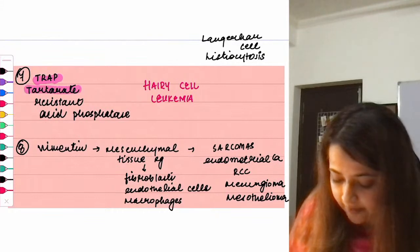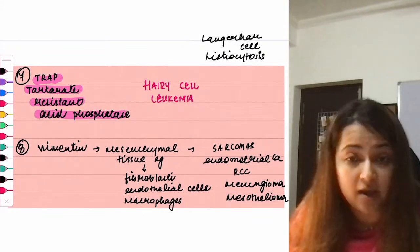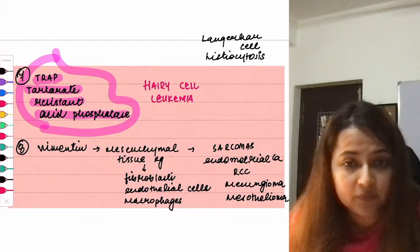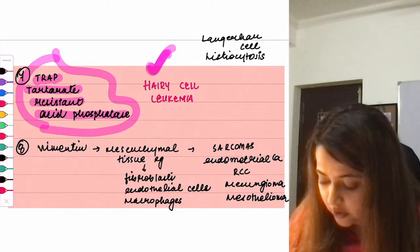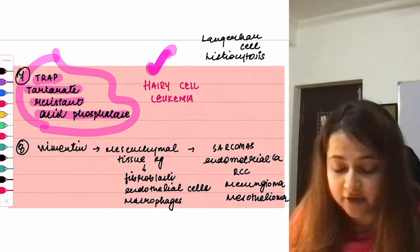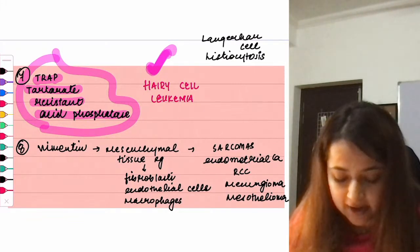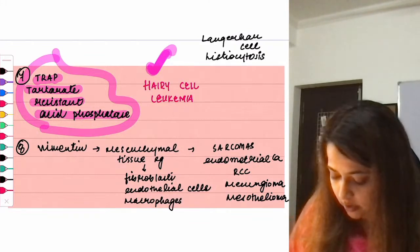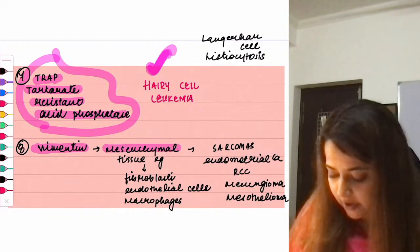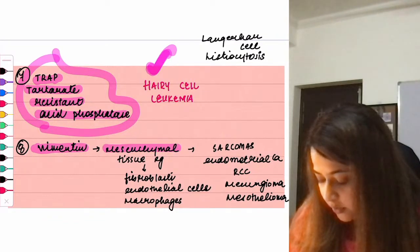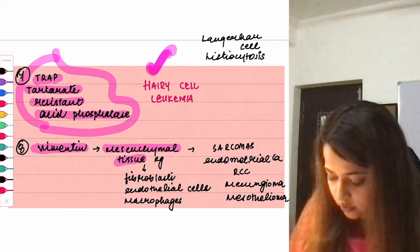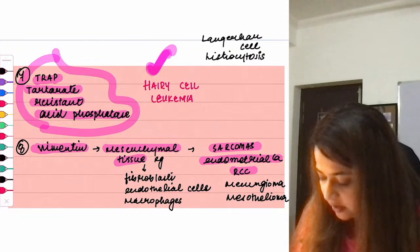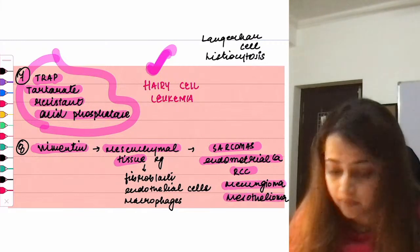TRAP (Tartrate-Resistant Acid Phosphatase): if a question says TRAP positive, the answer is hairy cell leukemia. Vimentin is a marker indicating mesenchymal origin — examples include sarcomas, endometrial carcinoma, RCC, meningioma, and mesothelioma.